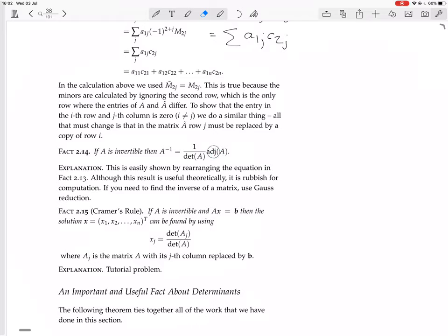You have to calculate N squared cofactors, each cofactor being a determinant of an N minus 1 by N minus 1 matrix, so that's a huge computation. So it's useful theoretically, but it's rubbish for computation. If you actually need to find the inverse, don't use this formula, use Gauss reduction.